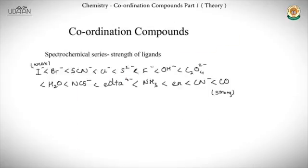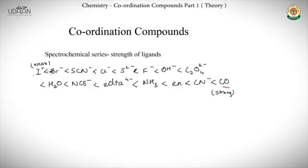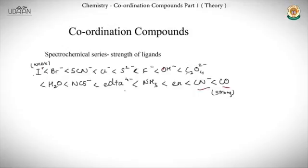The spectrochemical series ranks ligands by their field strength. Weak ligands start with I⁻, Br⁻, and increase in strength up to carbonyl (CO), which is the strongest. A useful way to remember: if the donating atom is highly electronegative (like halogens or O), the ligand is weaker; if donating from carbon (like CO, CN⁻, en), it is stronger. This is an approximate but helpful memory aid.